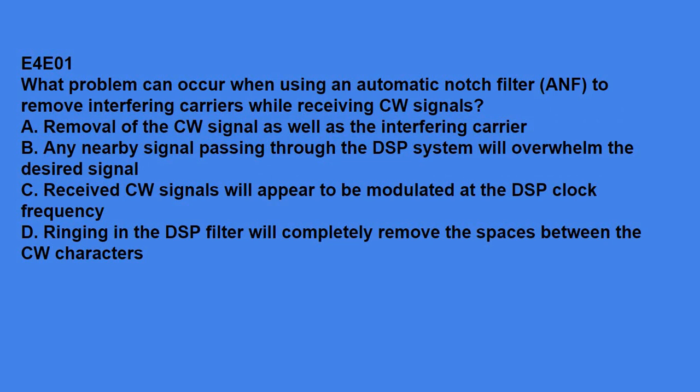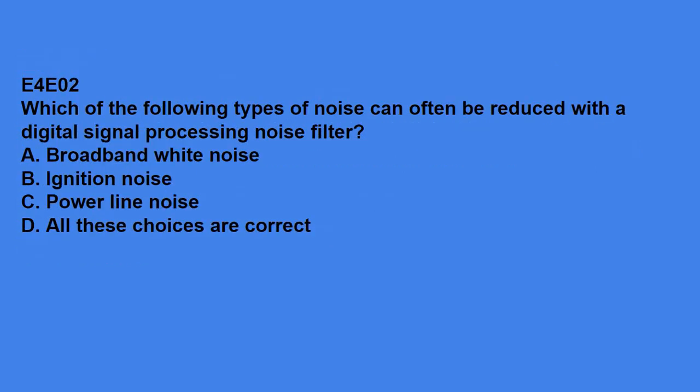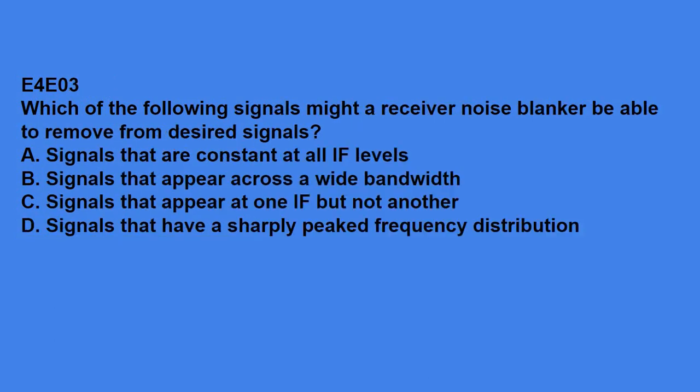E4E01, what problem can occur when using an automatic notch filter to remove interfering carriers while receiving CW signals? Answer is, removal of the CW signal as well as the interfering carrier. E4E02, which of the following types of noise can often be reduced with digital signal processing noise filter? Answer is, all of these are correct, so it can remove broadband white noise, ignition noise, and power line noise. E4E03, which of the following signals might a receiver noise blanker be able to remove from desired signals? Signals that appear across a wide bandwidth.